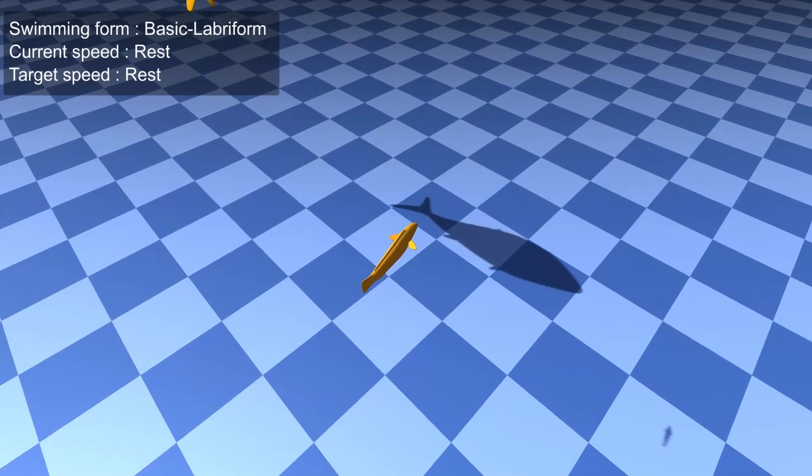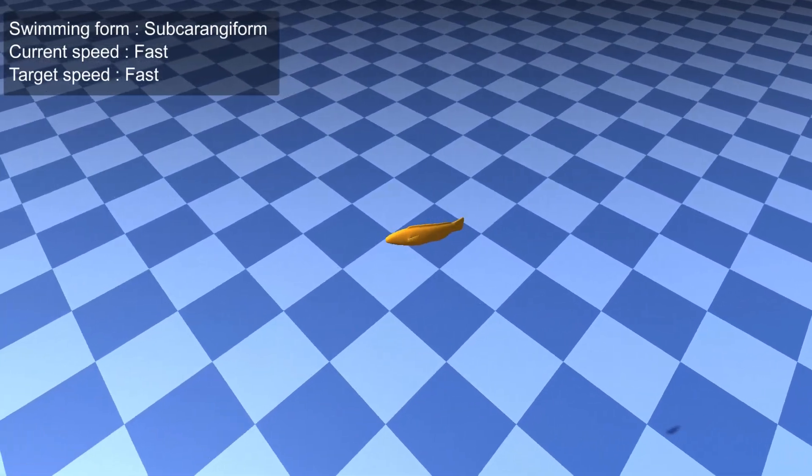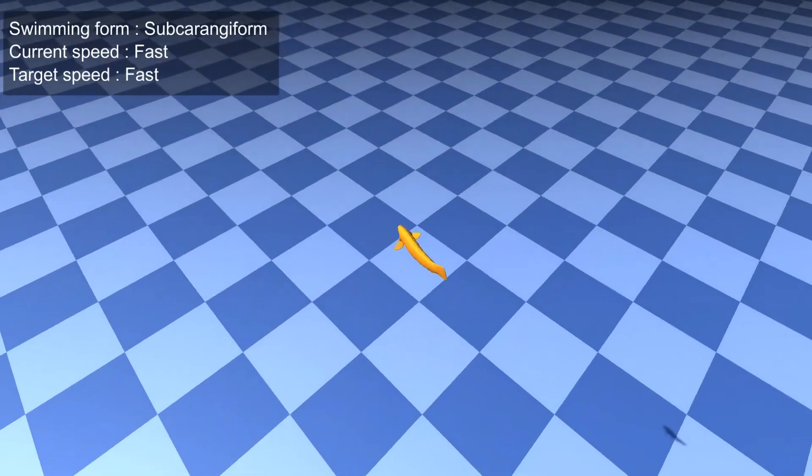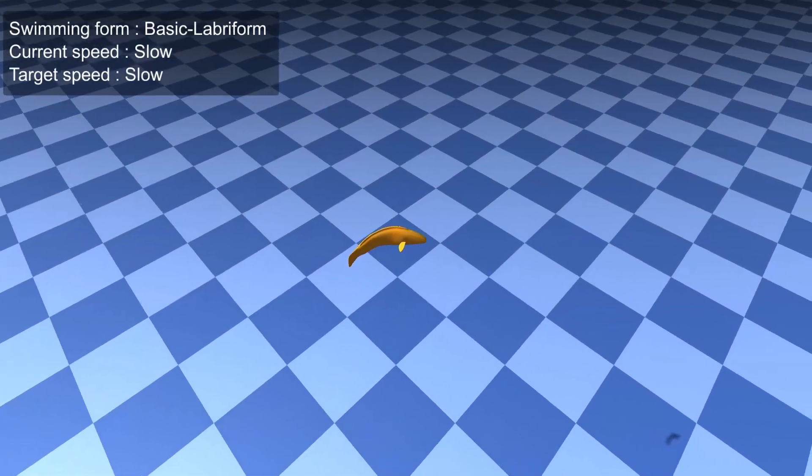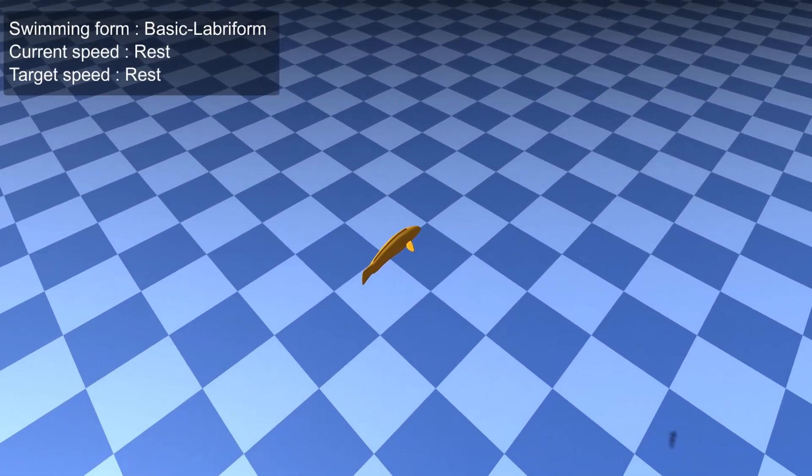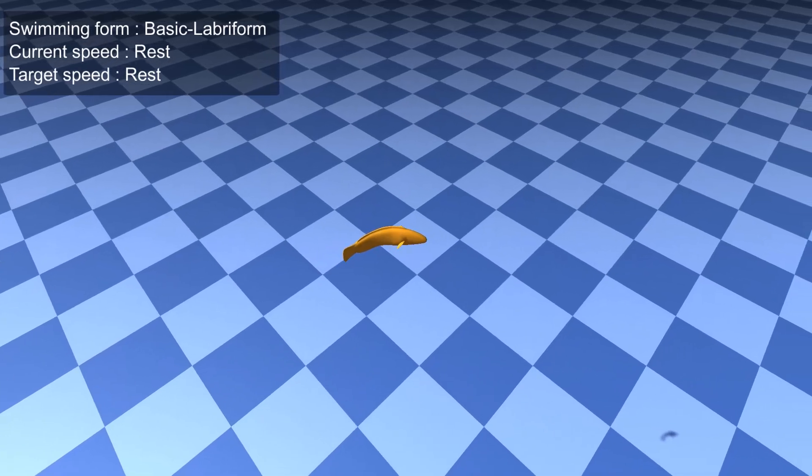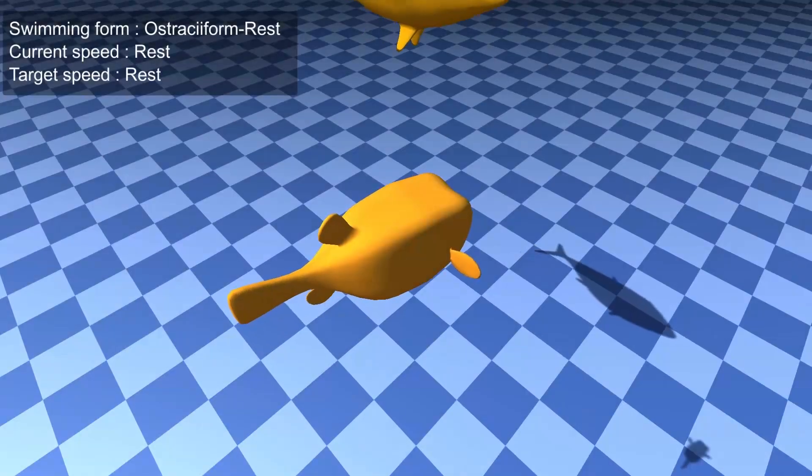The virtual fish switches the swimming form depending on the change in the situation. This virtual fish rapidly turns to escape predator and continues to swim fast in wave-like movement for a while.